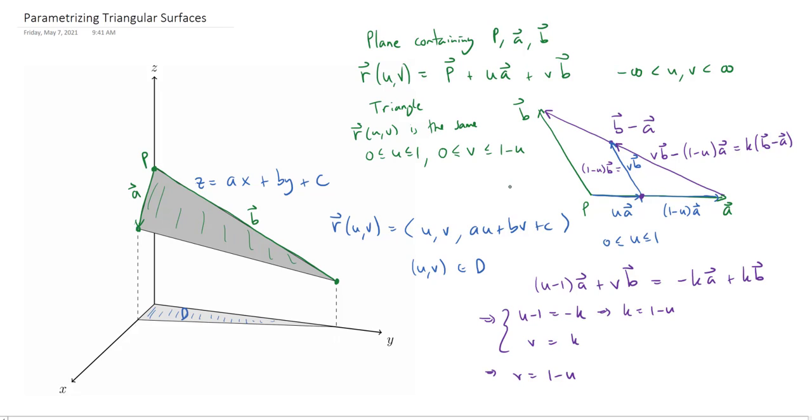And so that's how we can parameterize a triangular surface given a point and two vectors or three points that are supposed to be the vertices of the triangle in three space.